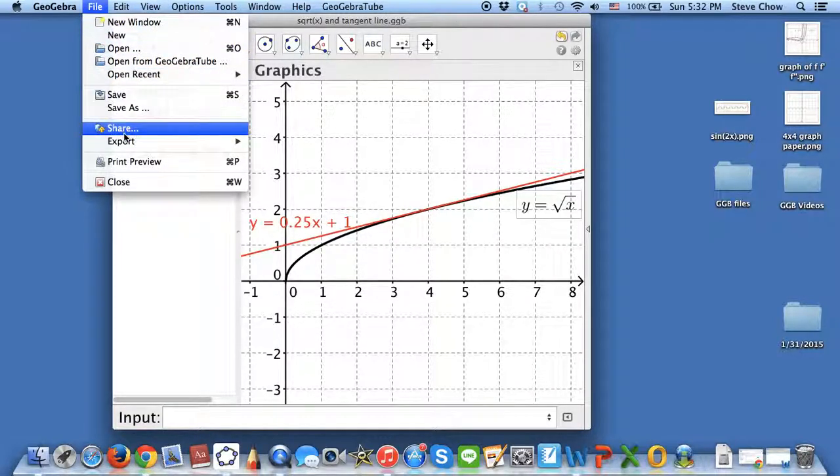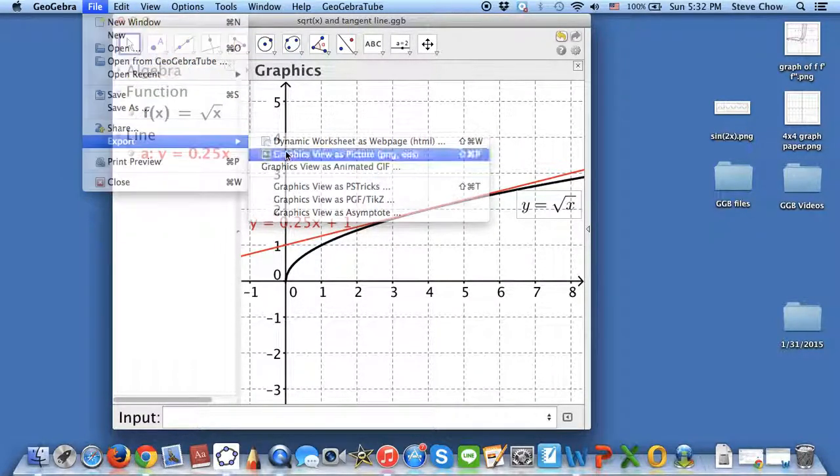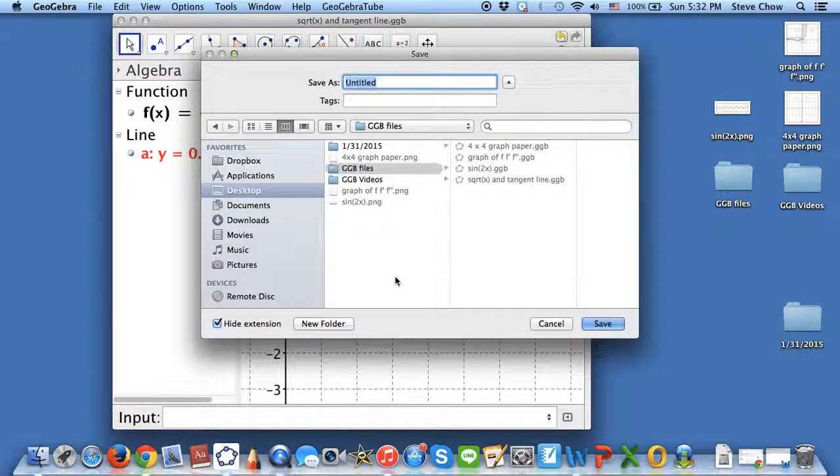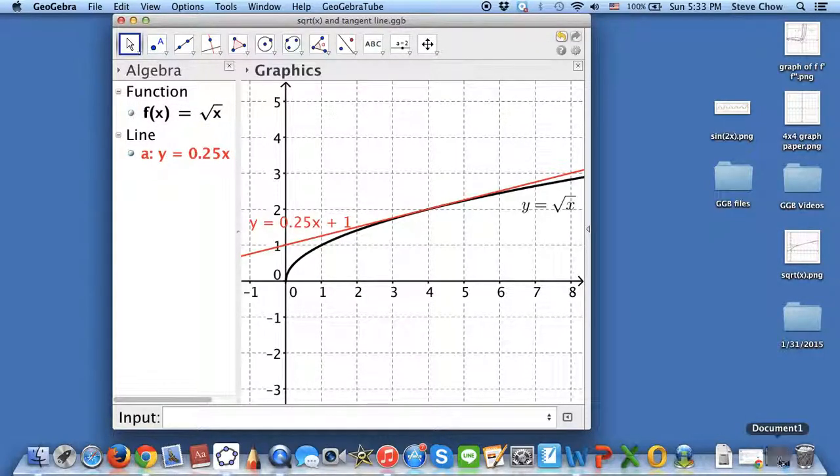And once again, you can export the pictures and just save. And I'm just going to go to desktop and just put square root x. And this way, once again...